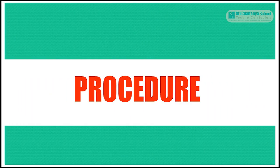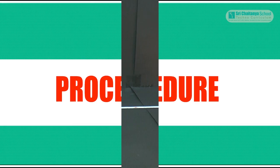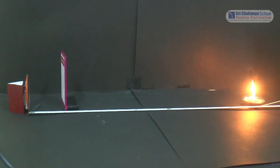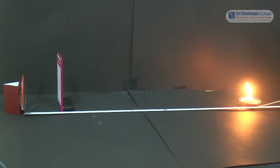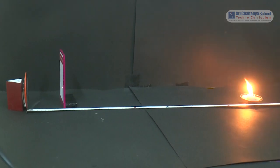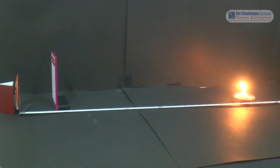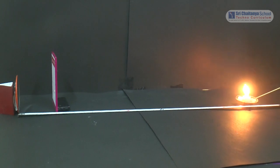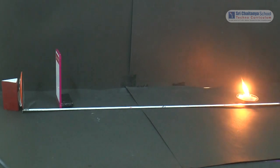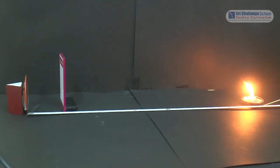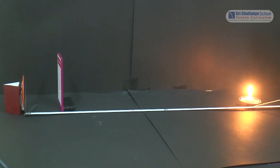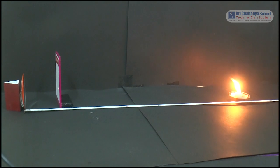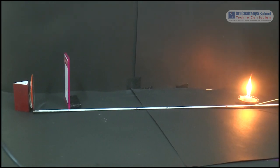The procedure of this experiment is: place the concave mirror, candle, and measuring tape as shown in the figure. By keeping the candle at different distances from the mirror along the axis and by moving the screen, find the position where you get a sharp image on the screen.